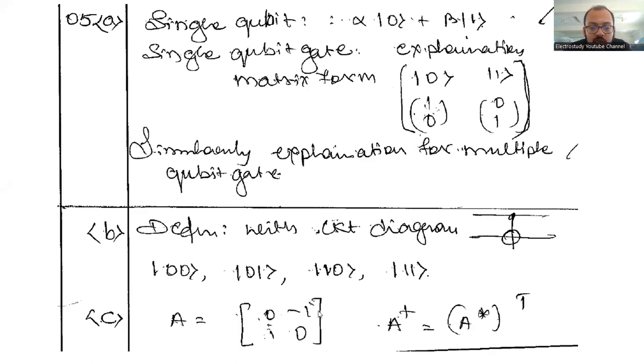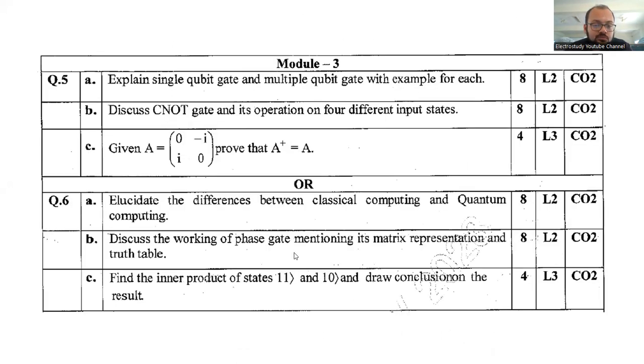You can prove like this. See, A is equal to given matrix 0 minus i, i 0, A star, A star whole transpose that you're supposed to prove, which has the weightage of four marks. Very simple question.